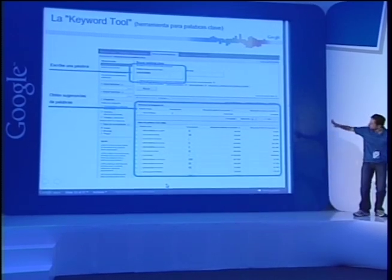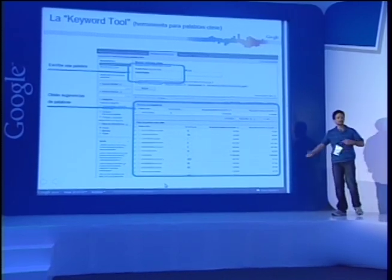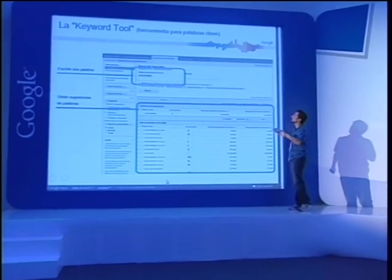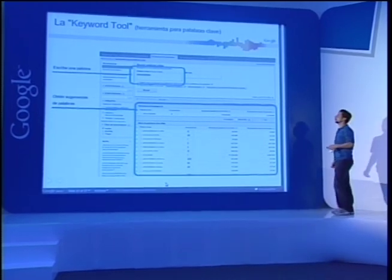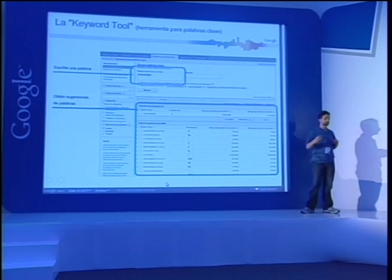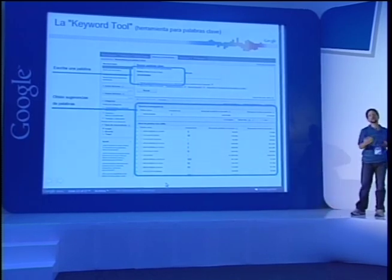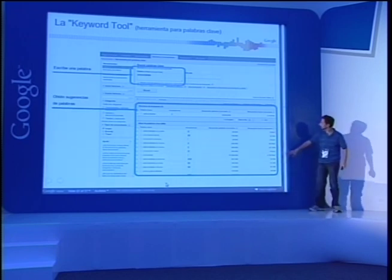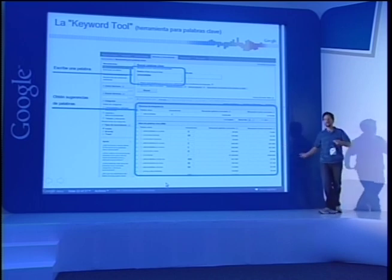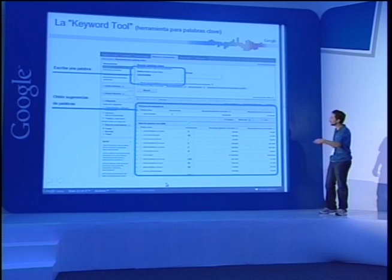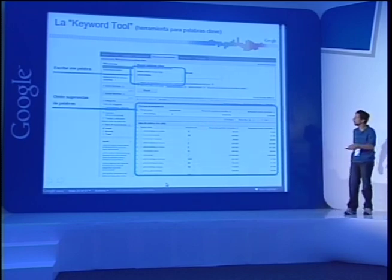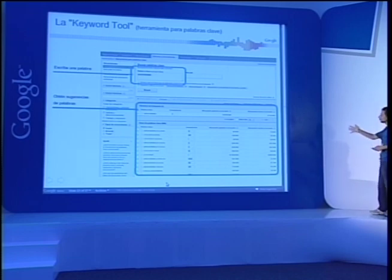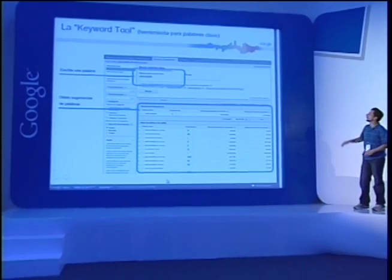Dentro de las cuentas de AdWords hay una herramienta llamada Keyword Tool o herramienta de palabras clave. Ustedes ponen una o más palabras, como 'universidades' o 'escuelas', y Google automáticamente recomienda sinónimos y variaciones. También muestra el número de búsquedas globales y el número de búsquedas mensuales en México, para saber qué tanto tráfico les podría generar esa palabra, y el nivel de competencia entre anunciantes.